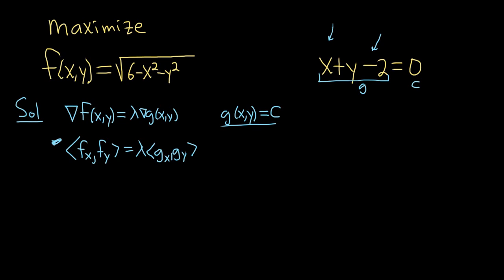Before we take the partial derivatives of f, it might be beneficial to rewrite this as follows. We can write the square root function as an exponent, the 1 half exponent. So now when we take the partials, it's a little bit easier.